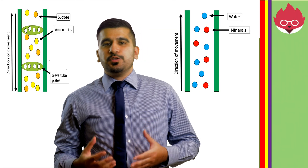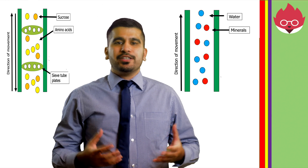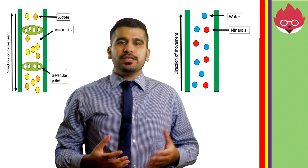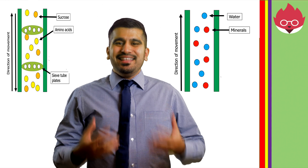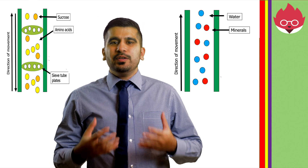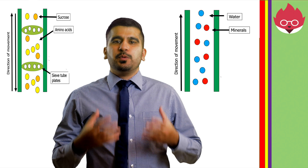In our last lesson, we looked at plant tissue's role in transporting water and nutrients in plants. In this lesson, we'll be looking at transport in humans, where we will examine the role of different components in blood, the structure of the heart, and the blood vessels.